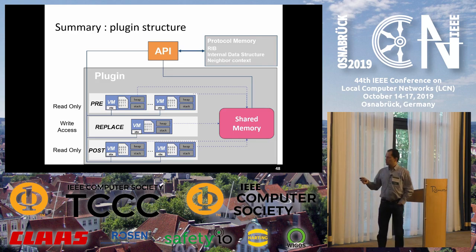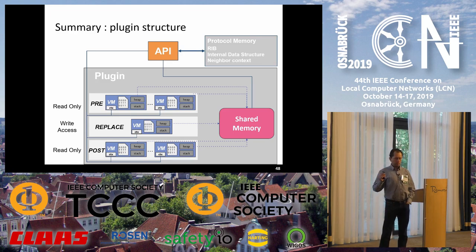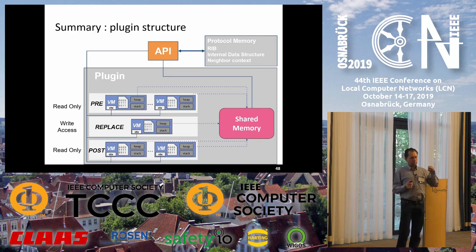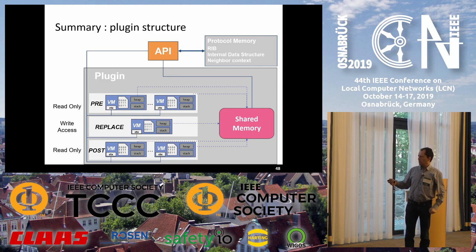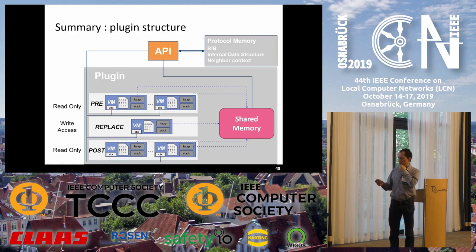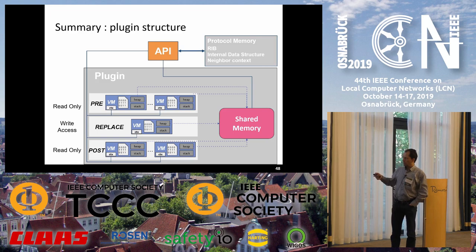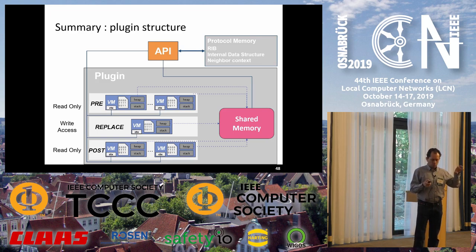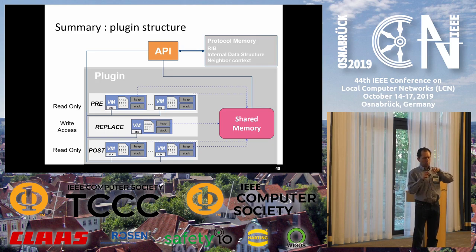So you have a protocol that maintains states and data structures and exposes an API. Inside this implementation, we can attach different types of eBPF code called plugins. We can attach eBPF code at the beginning of a function — the pre-eBPF plugin — with read-only access to the protocol data structure. We can attach code at the end of a function execution — the post-plugin. We can also replace a function entirely, with write access to the memory maintained by that function. There is also shared memory we can share between different plugins — useful for example when computing the difference between data collected at the beginning and end of a function.